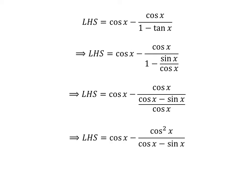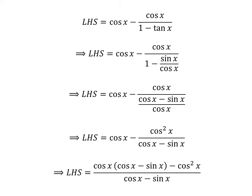As the denominator of the bottom fraction multiplies with the numerator of the top fraction, the left hand side becomes cosine of x minus cosine squared of x upon cosine of x minus sine of x upon cosine of x.